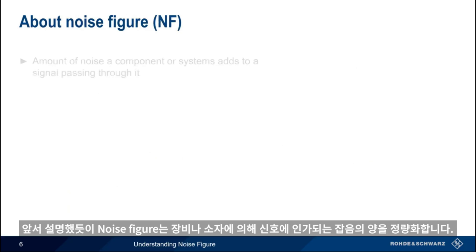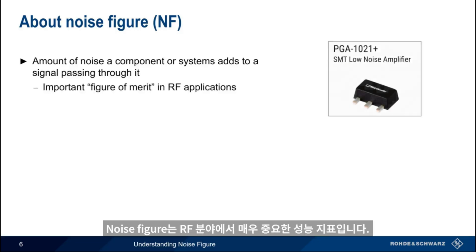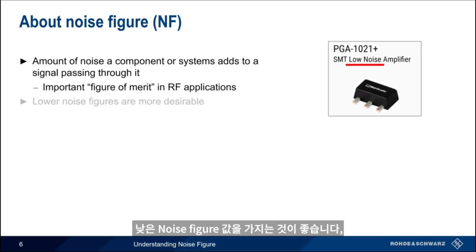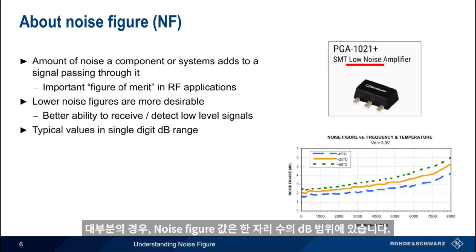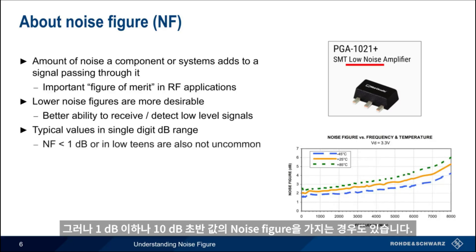Noise figure quantifies the amount of noise that a component or device adds to a signal passing through it. Noise figure is a very important figure of merit in RF applications. Lower noise figure values are more desirable, since low noise figure components or systems make it easier to receive and/or detect low-level signals. In most cases, typical noise figure values are in the range of single-digit decibel values, although noise figures of less than 1 dB or in the low teens of dB are also not uncommon.